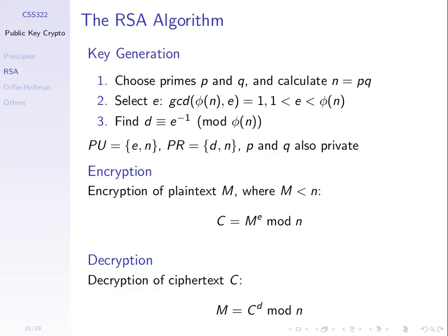This algorithm uses mathematical operations which are easy to do in one way but hard to do in the other — called a one-way function or trapdoor function. For example, it's easy to calculate φ(n) if you have p and q, but hard to calculate φ(n) if you don't have p and q and have to work from the actual value of n.